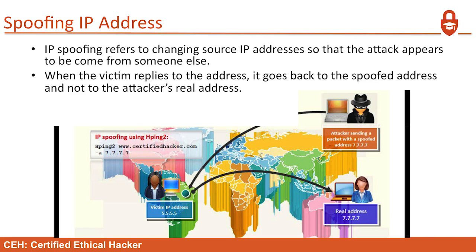So you start trying to cause a DOS attempt, but you're using another person's address — then they get all of the bouncing or attack traffic. IP spoofing using HPing2 — you'll see a lab on this. The command is: hping2 www.something.com -a 7.7.7.7. You would be able to complete a three-way handshake and open a successful TCP connection with a spoofed IP address.